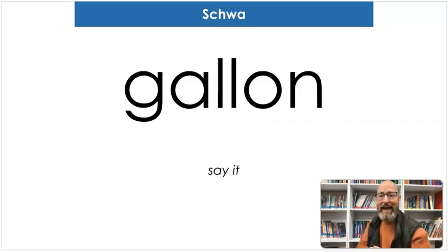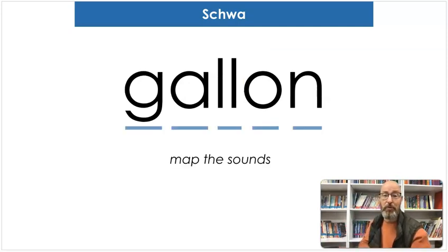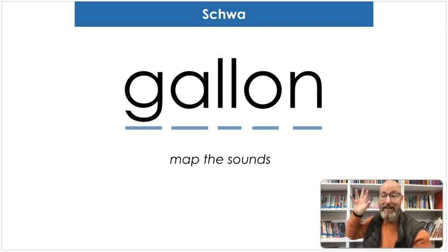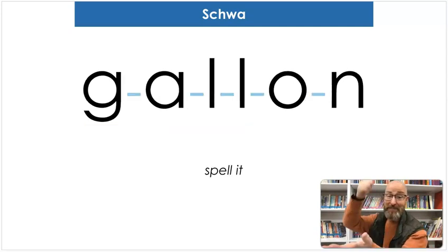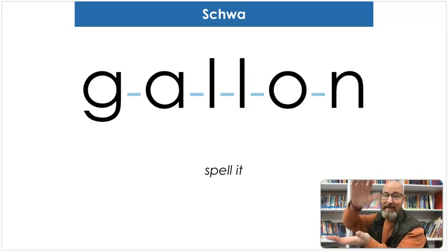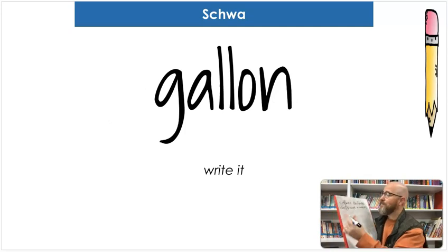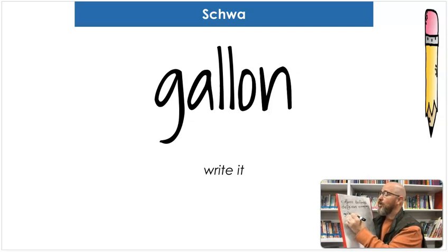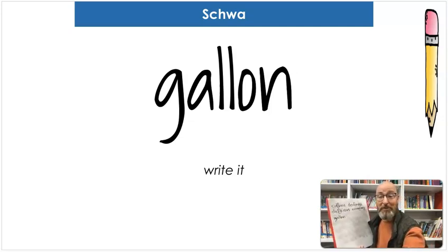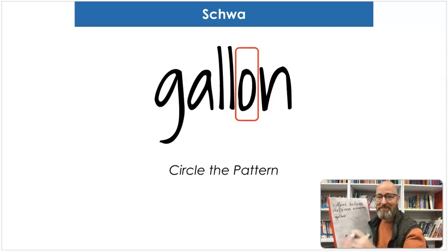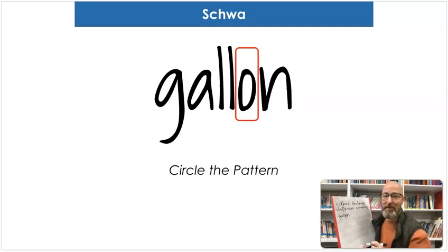Our next word is 'gallon.' Say gallon. You might buy a gallon of milk from the grocery store. G-A-L-U-N. Gallon. I heard this schwa. G-A-L-L-O-N. Gallon. And let's write it: G-A-L-L-O-N. And where's the schwa? In the O — that's right. Circle it.